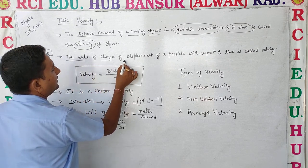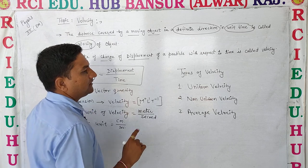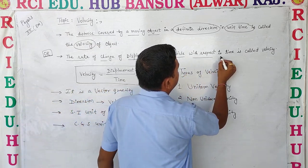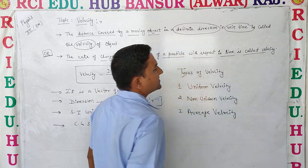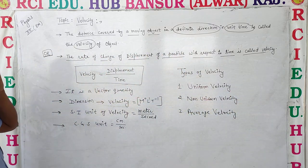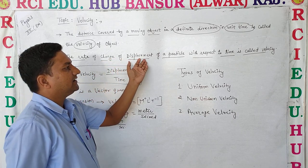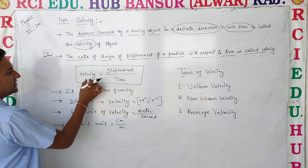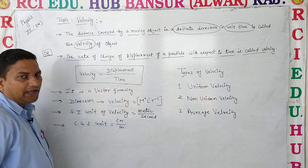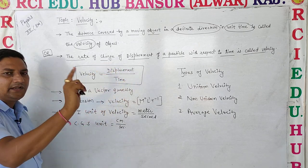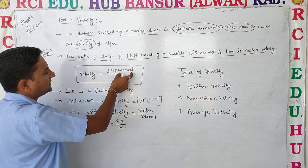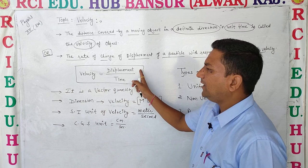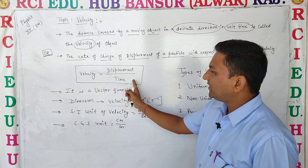The rate of change of displacement of a particle with respect to time in a particular direction is called Velocity. It means Velocity is equal to displacement upon time — or distance in a particular direction, i.e., displacement in a particular direction upon time.